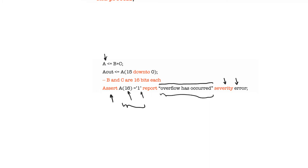After the severity keyword, we have several possible severity levels: note, warning, error, and failure. Note, warning, and error are qualitative statements about what has happened. If something is just worth noting, it would be note level; if it's a big deal, it should be error level. Failure, on the other hand, is a specifically important severity level because it will cause the simulation to halt. All other assertions will just display a message and assert a certain severity level.